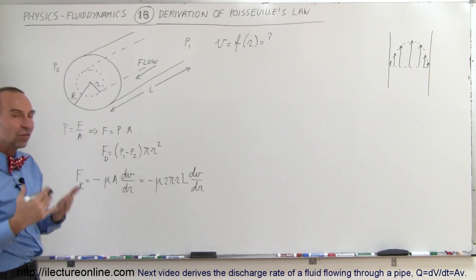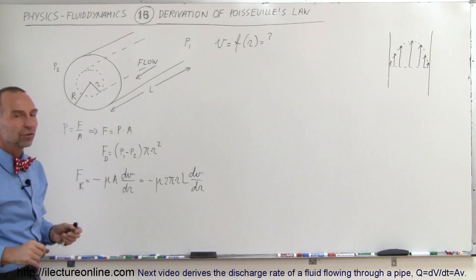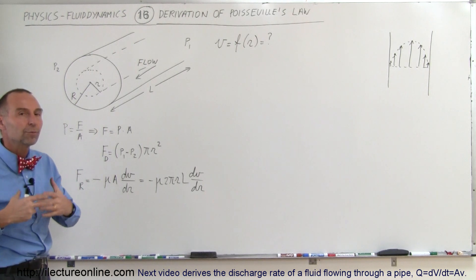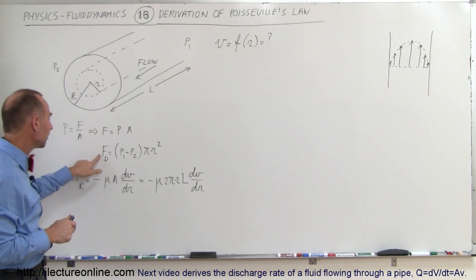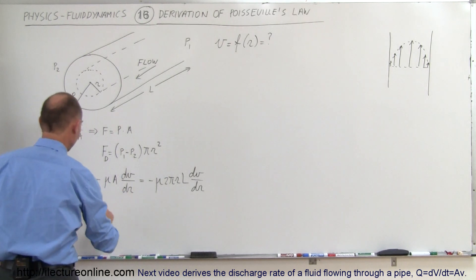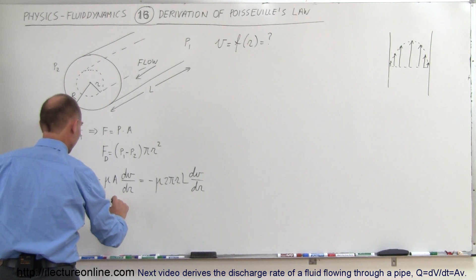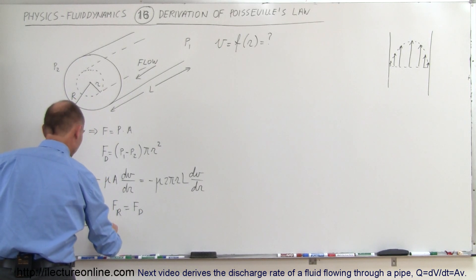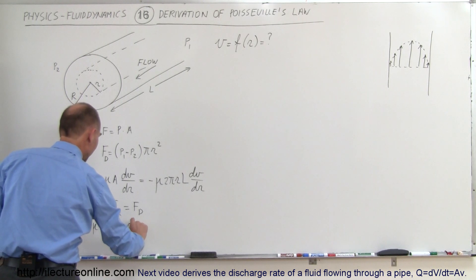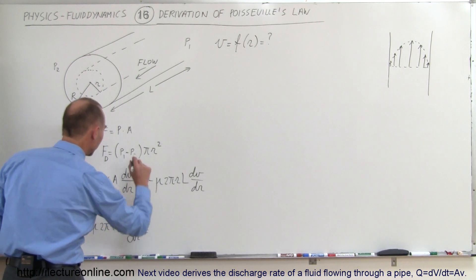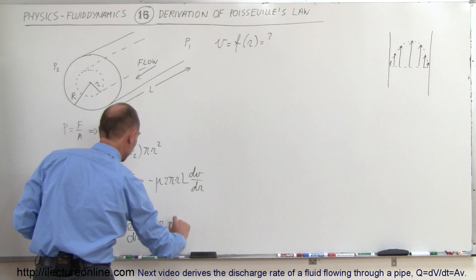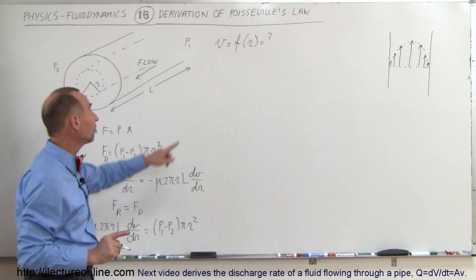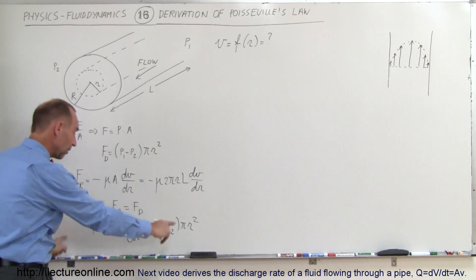At a steady-state situation, the driving force will equal the retarding force. If the driving force is larger, the fluid will be accelerating; if smaller, the fluid will be slowing down. So in the steady state, the driving force equals the retarding force. We can write: minus mu times 2πrL times dv/dr is equal to (P1 minus P2) times pi times r squared. Remember, we're trying to find the velocity as a function of r, so we have to solve this equation for velocity.